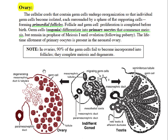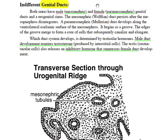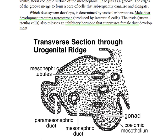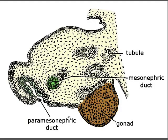Male and female genital ducts are present in all embryos: the male being the mesonephric duct and the female the paramesonephric duct. Under the influence of testosterone from interstitial cells of the testis, the mesonephric duct will become the epididymis and ductus deferens. In the absence of testicular inhibitory hormones from sustentacular cells, the paramesonephric duct would become the uterine tube, uterus, and part of the vagina. This image represents a transection through the urogenital ridge of an embryo.